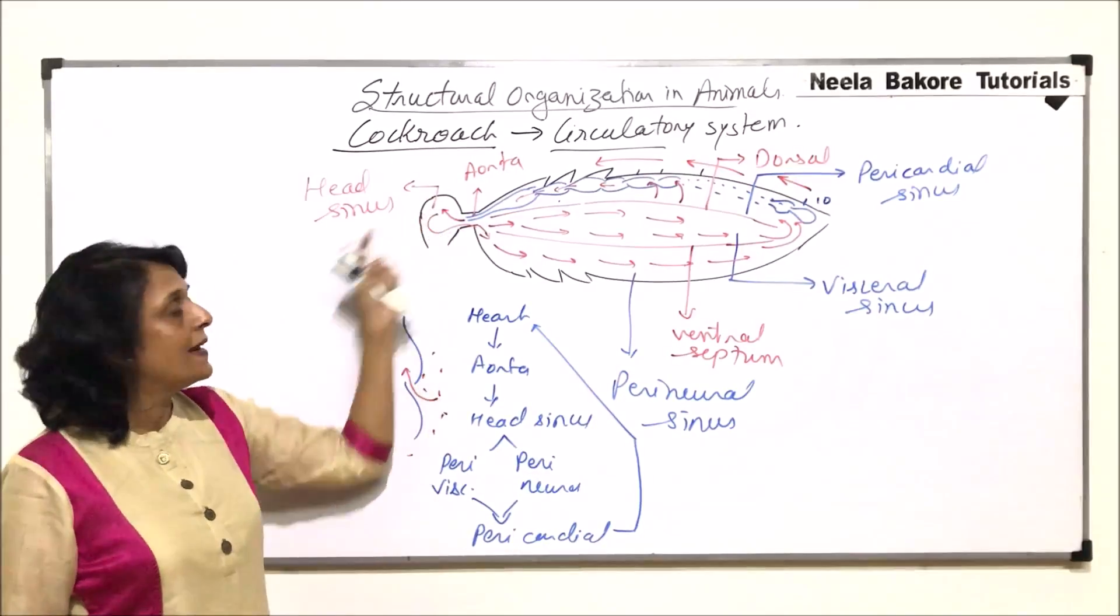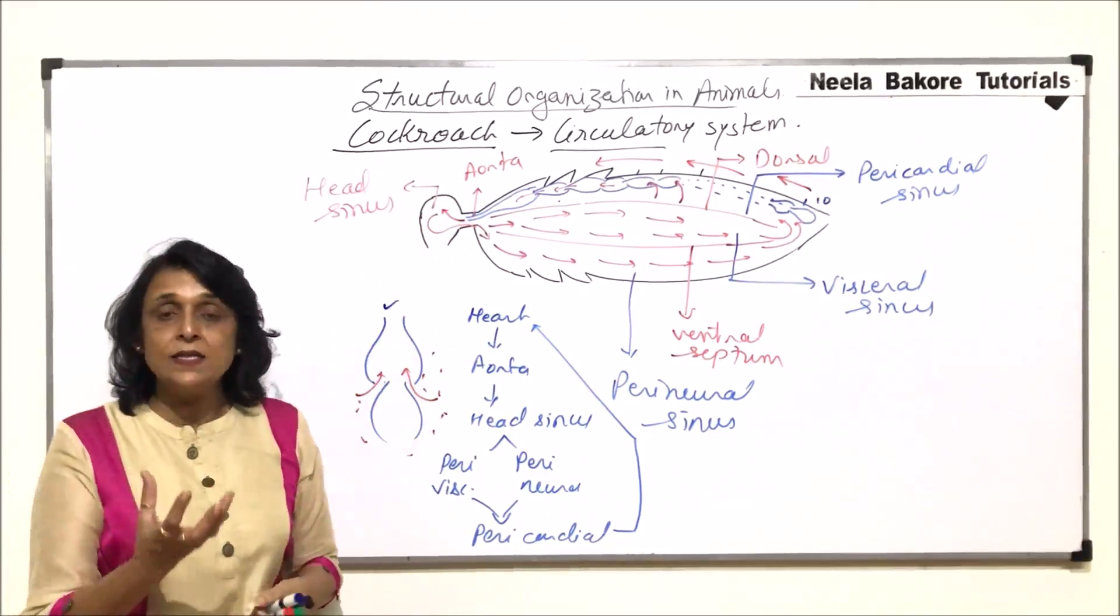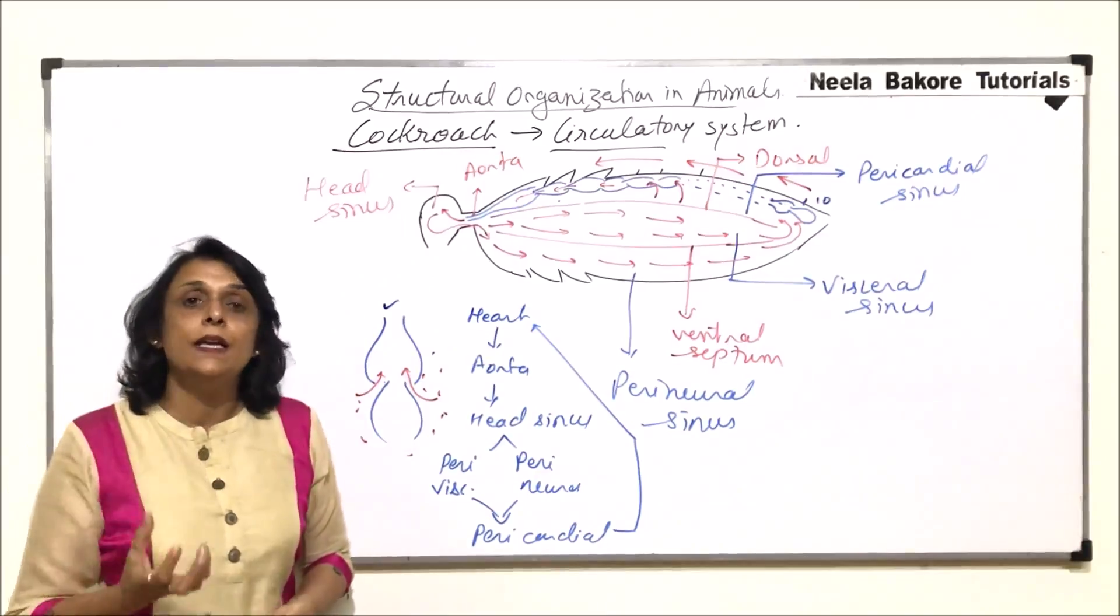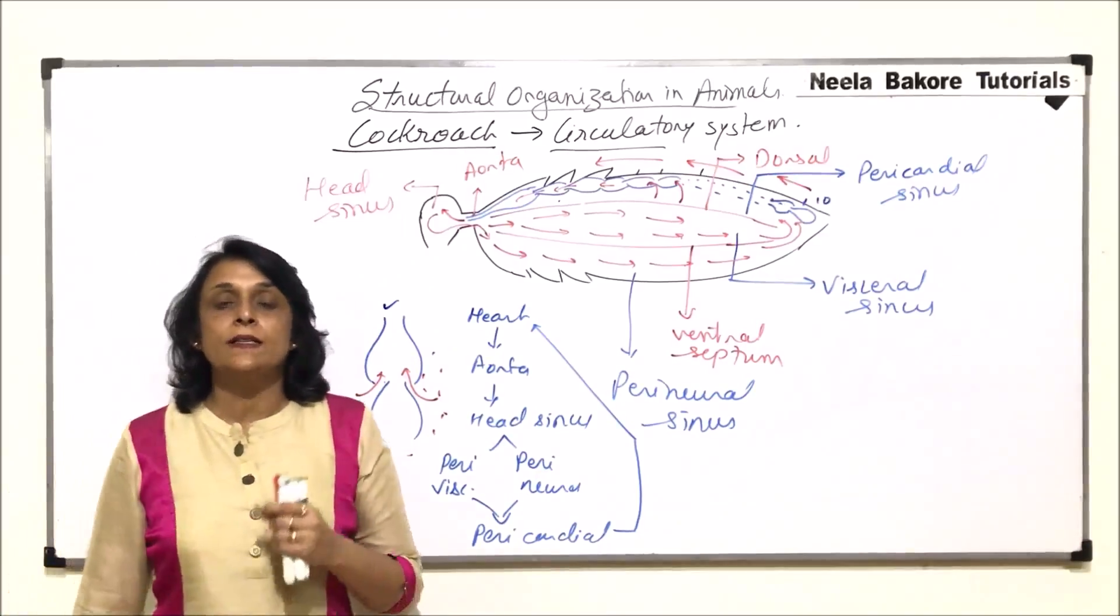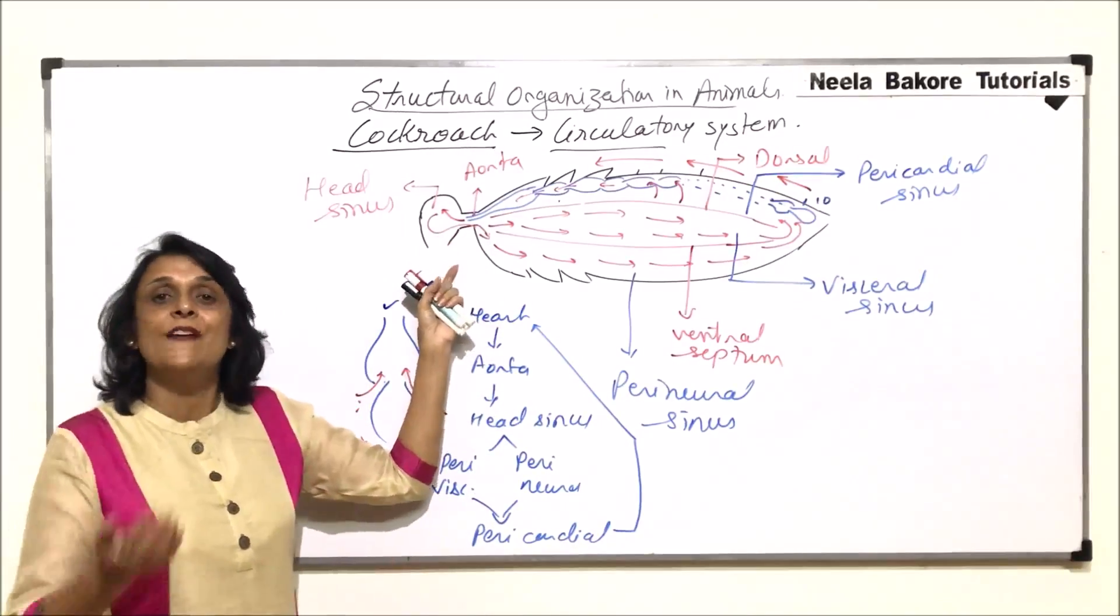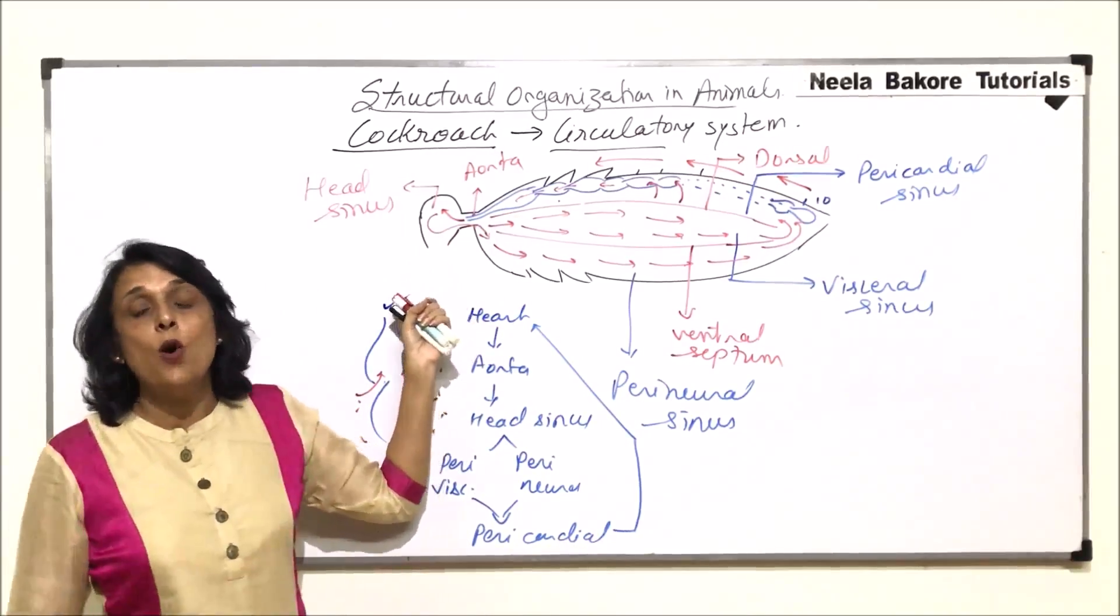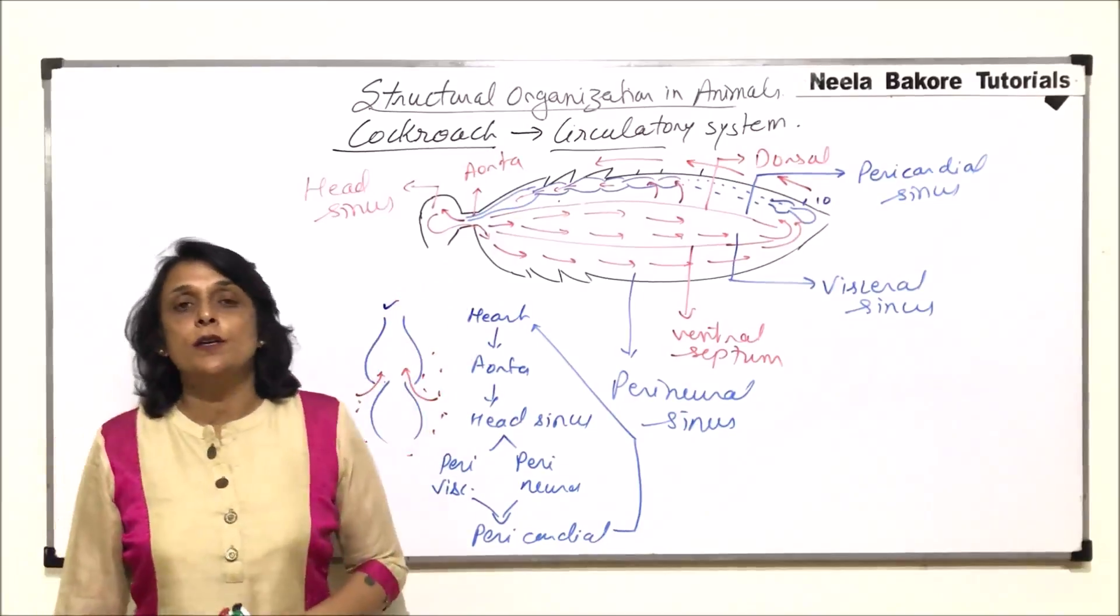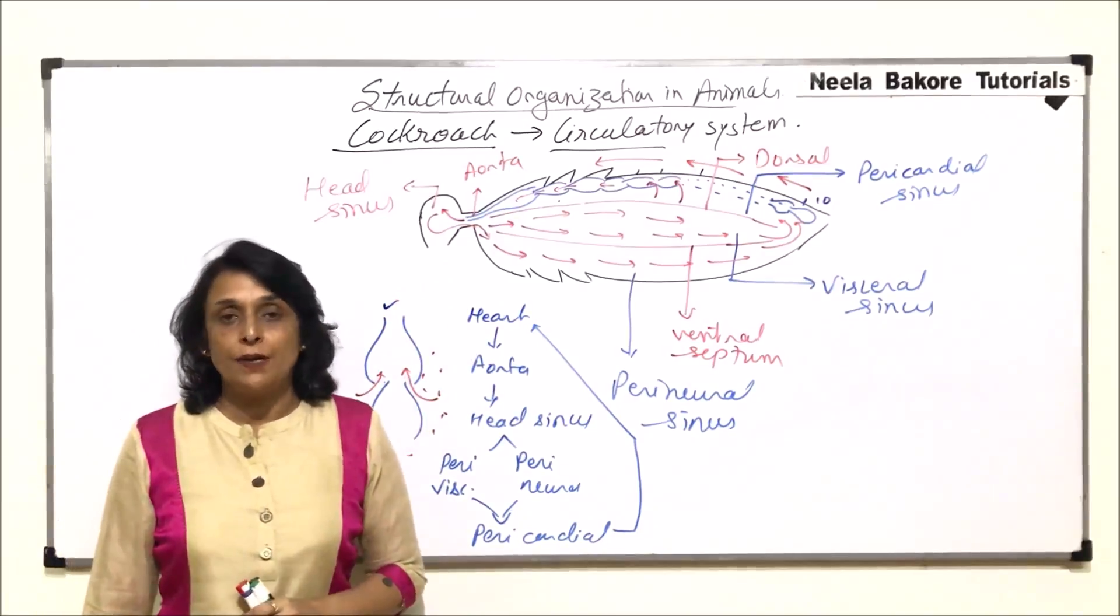All the organs which are there in this sinus, those are dipped in hemolymph. That means there is a direct exchange of substances between the hemolymph and that particular organ. And this is what is called the open circulatory system.